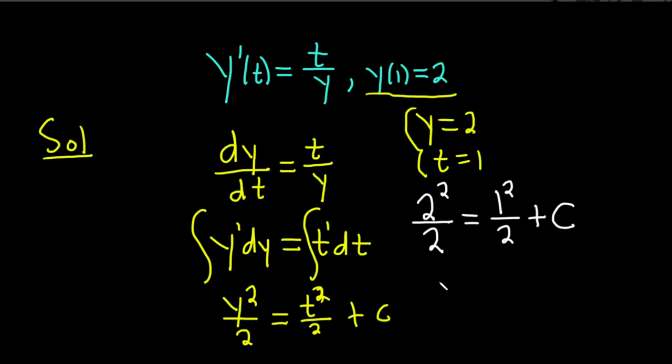Alright, 2 squared is 4. So this is 4 over 2. And this is equal to 1 over 2 plus our constant capital C. 4 over 2 is 2. So we get 2 equals 1 half plus c.